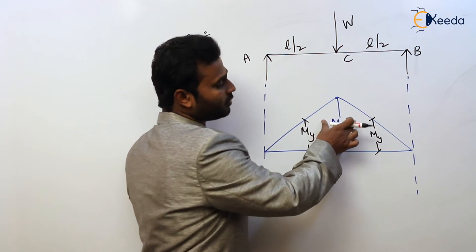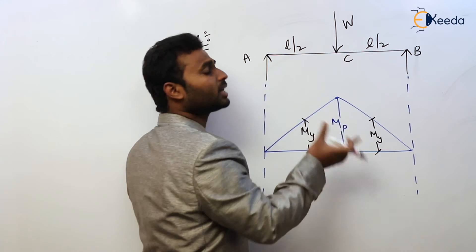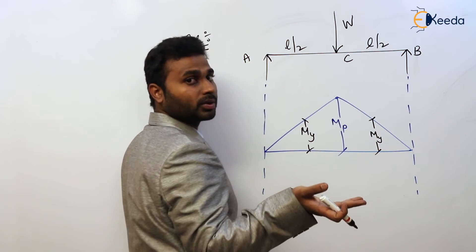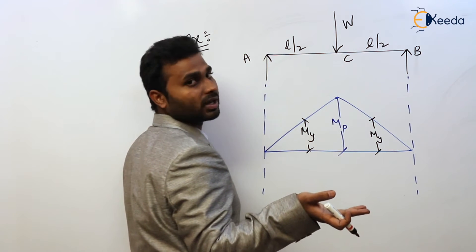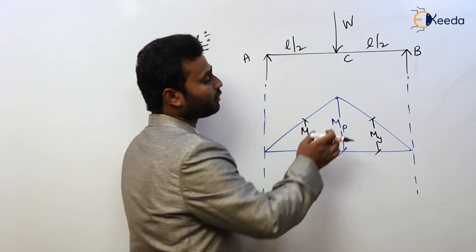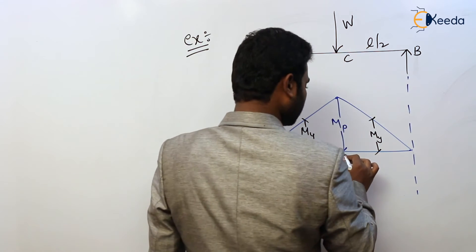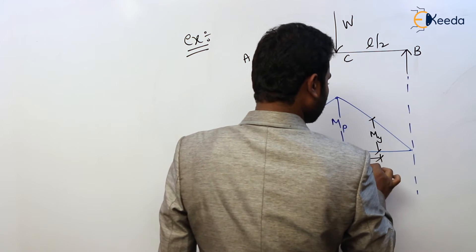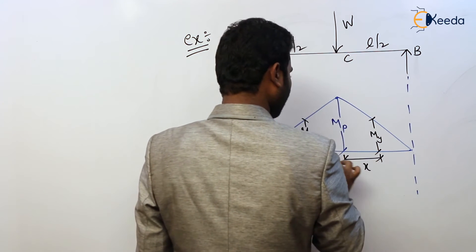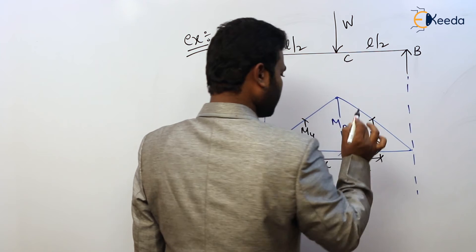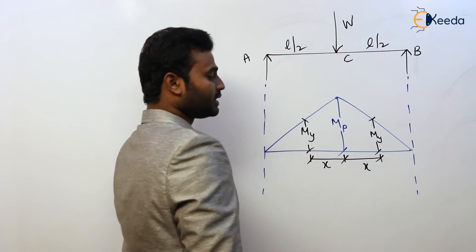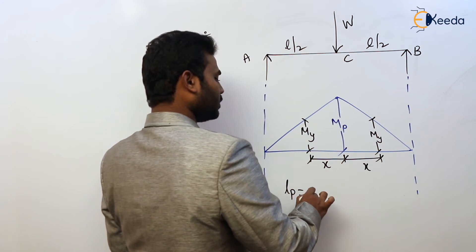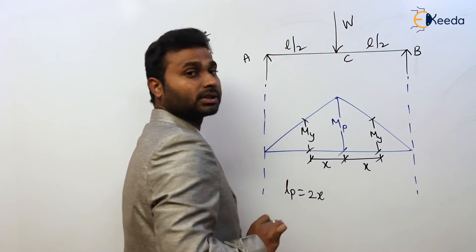Wherever the maximum bending moment occurs, the plastic state will develop there, and at that location the plastic moment MP will also develop. From the center, at a distance x, there exists a yield state — meaning the yield moment MY. So the plastic hinge length LP is equal to 2x, and we have to find that 2x.